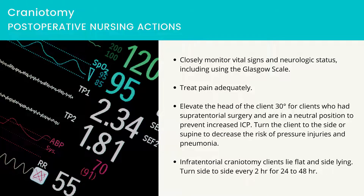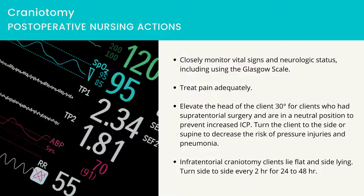Postoperative nursing actions: Closely monitor vital signs and neurologic status using the Glasgow scale. Treat pain adequately. Elevate the head of the client 30 degrees for supratentorial surgery to prevent increased ICP. Turn the client to the side or supine to decrease the risk of pressure injuries and pneumonia. Infratentorial craniotomy clients lie flat and side-lying; turn side-to-side every 2 hours for 24–48 hours. Straining activities should be avoided to prevent increased ICP. Postoperative bleeding and seizure activity are the greatest risks. Periorbital edema and ecchymosis are not unusual; treat with cold compresses. Assess head dressing every 1–2 hours for drainage.